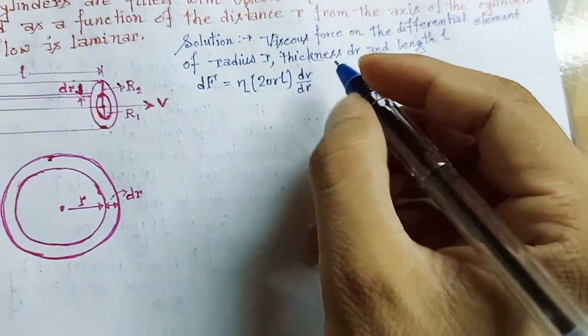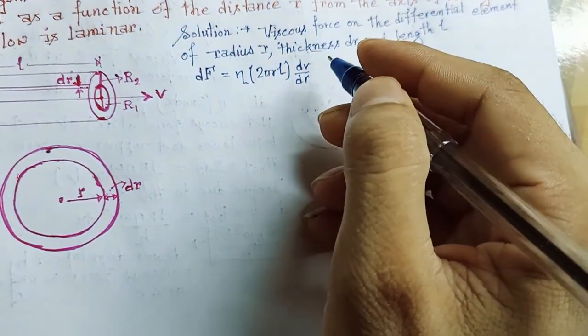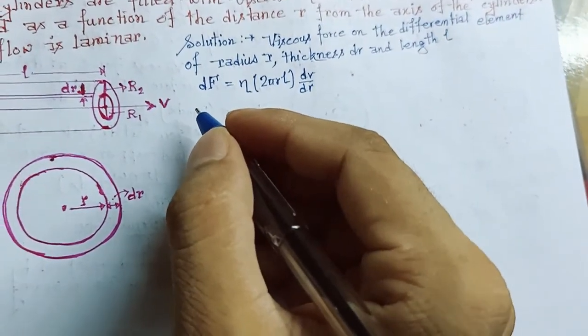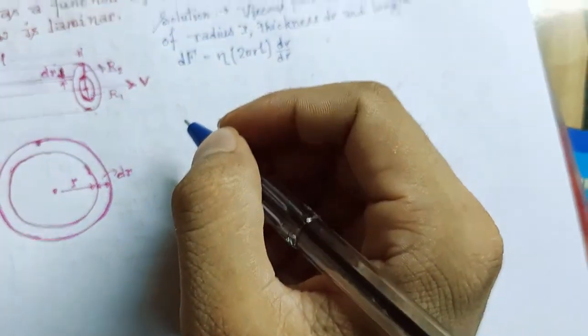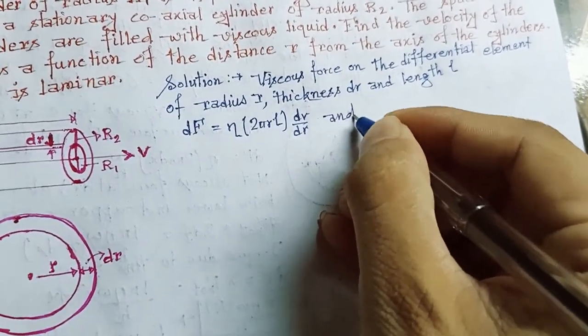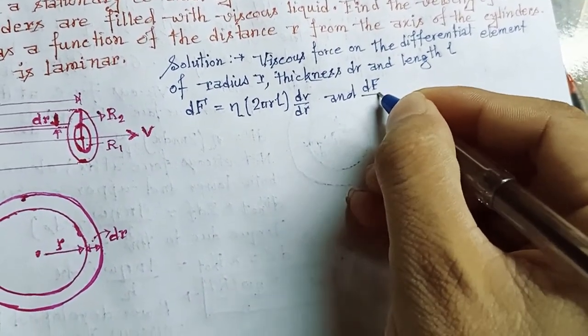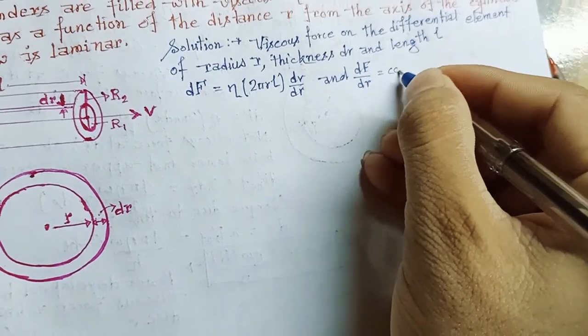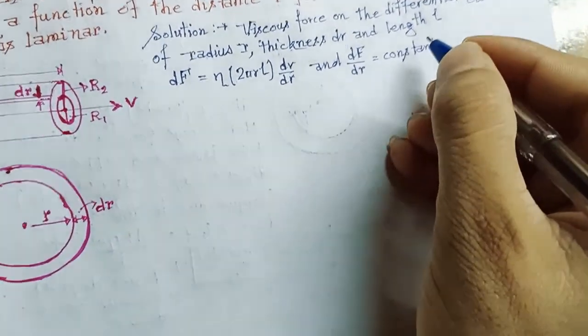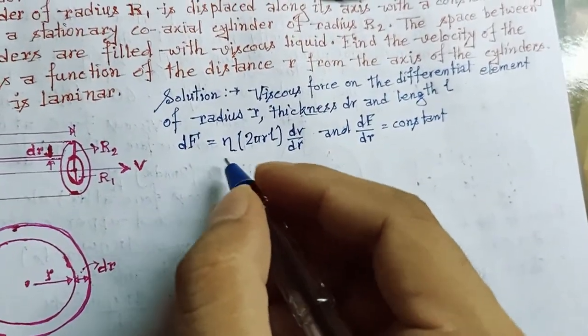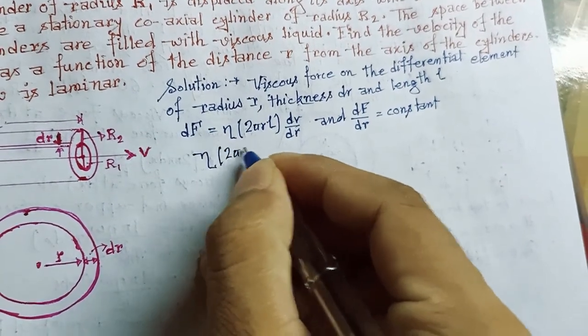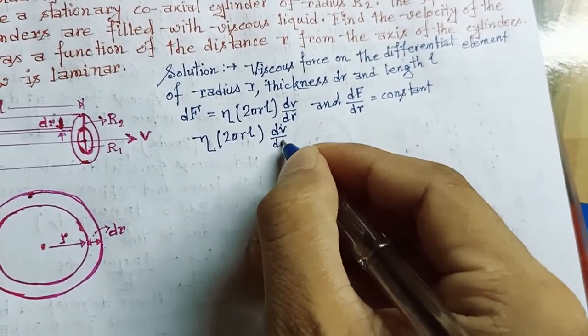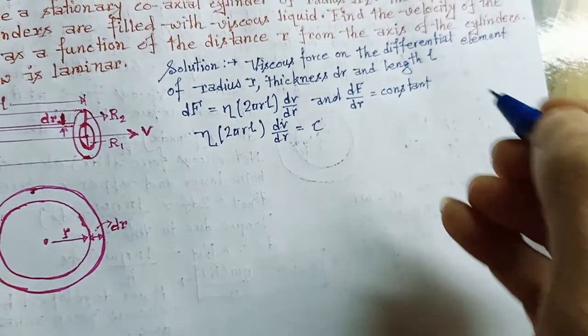2πrl is the curved cross-sectional area. In laminar flow, as the flow is laminar, df with respect to dr will be constant, which is equal to C.